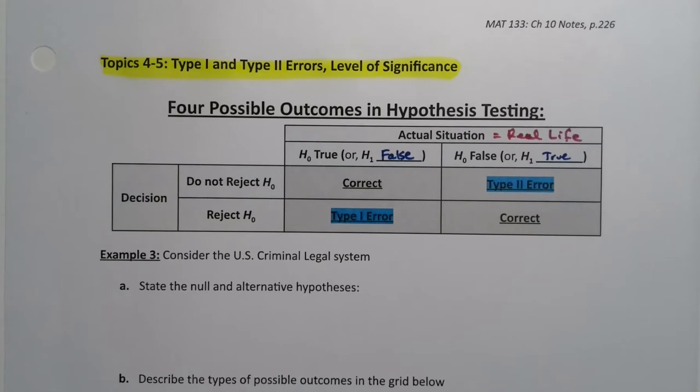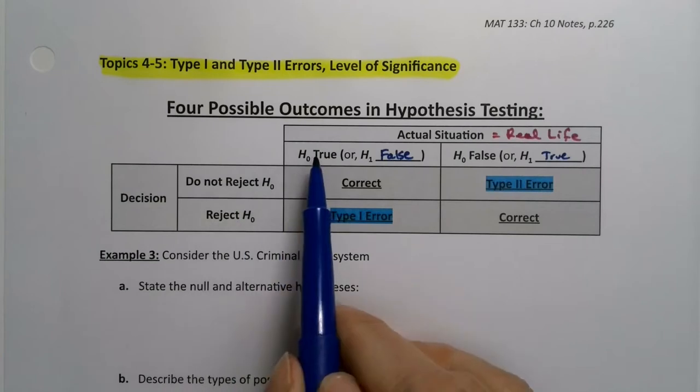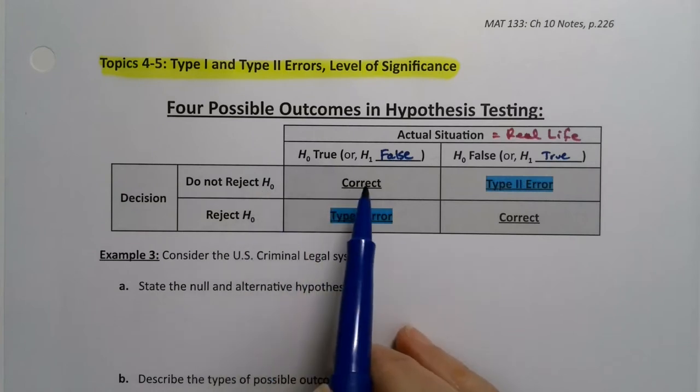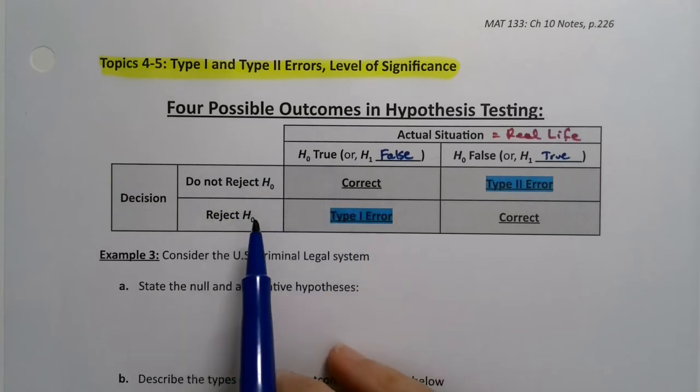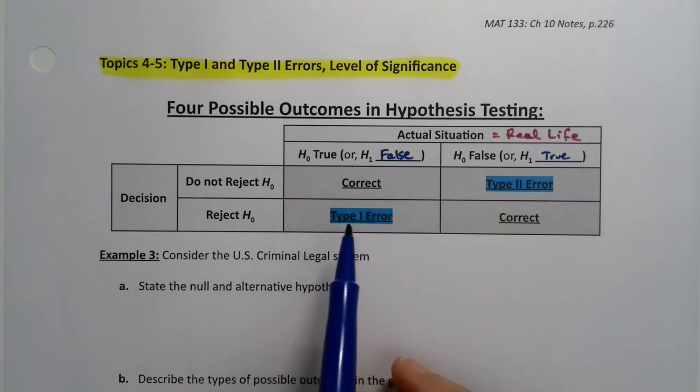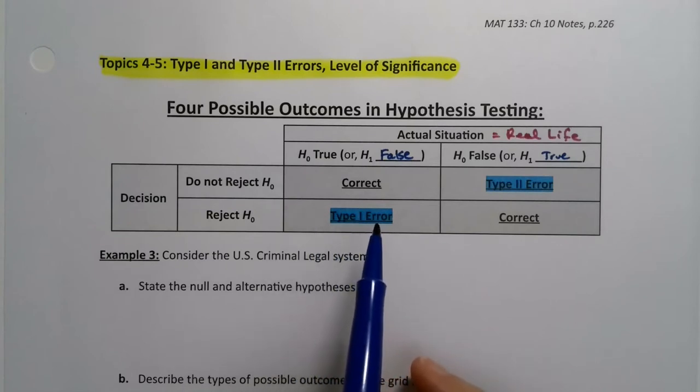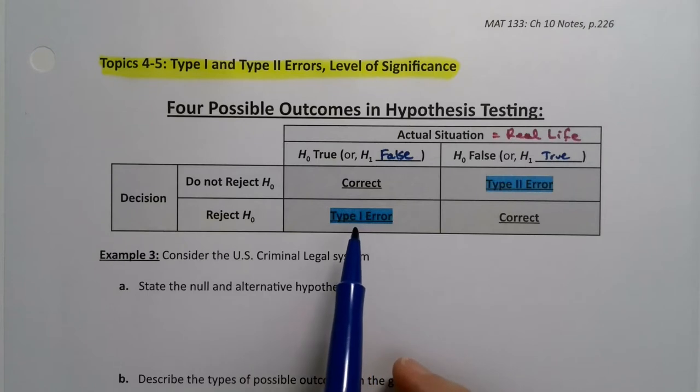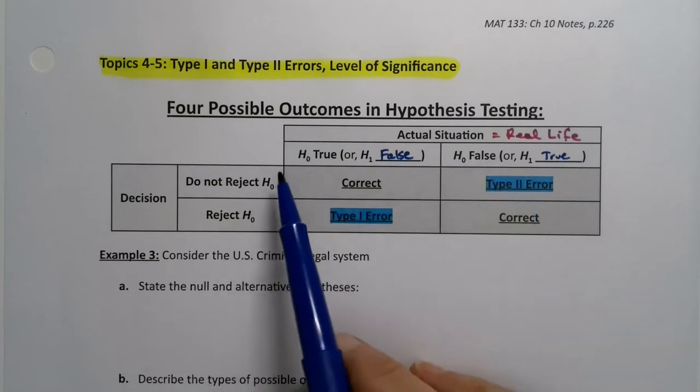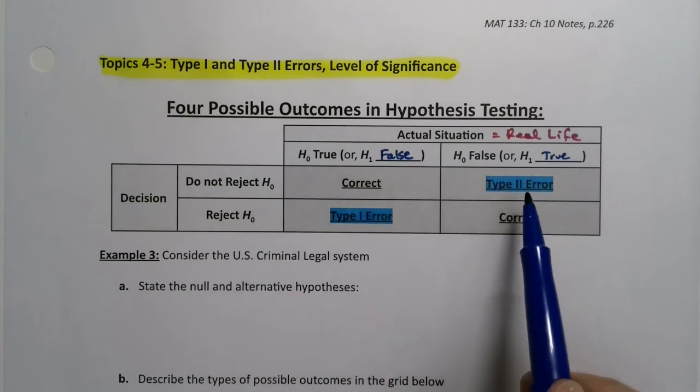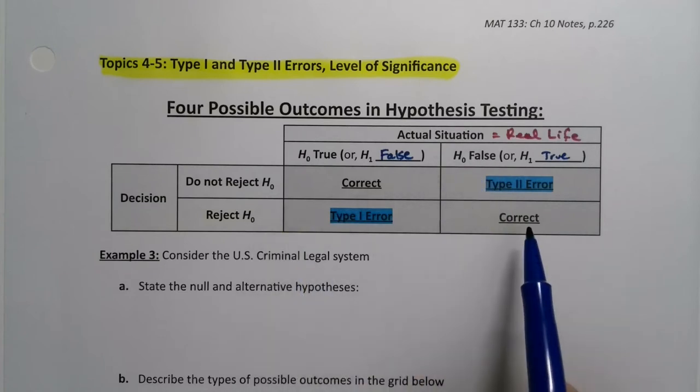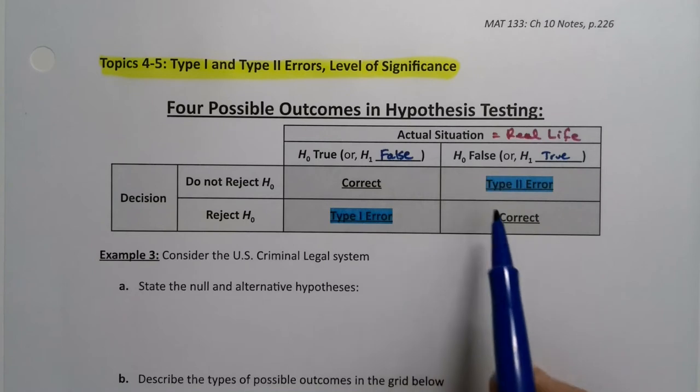So if I did not reject the null hypothesis and the null hypothesis was true, I made a correct decision. I let stand the null hypothesis and it was true. But if I rejected that null hypothesis and that null hypothesis was true, then I made a type one error. I did something bad, and the problem is you can't guarantee this will never happen. And then what if the null hypothesis was false, but I let it stand? I did not reject it. I let it slide. Then I made a type two error. And then if the null hypothesis was false and I rejected it, then that's a correct decision.